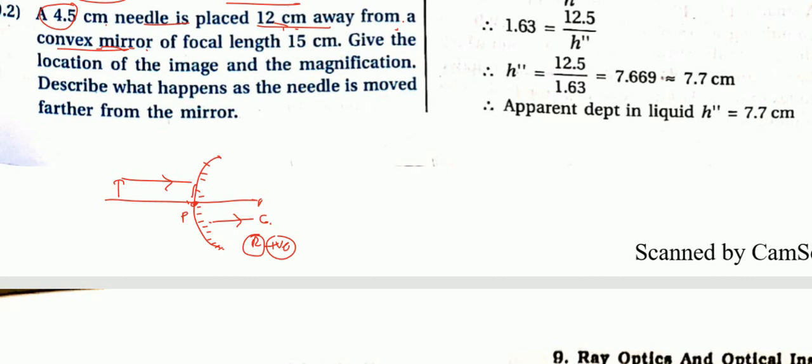We have the pole here and the center of curvature is behind the mirror. For a convex mirror, measuring from pole to center of curvature goes in the direction of the incident ray, so focal length and R are both positive. In the previous concave case they were negative.